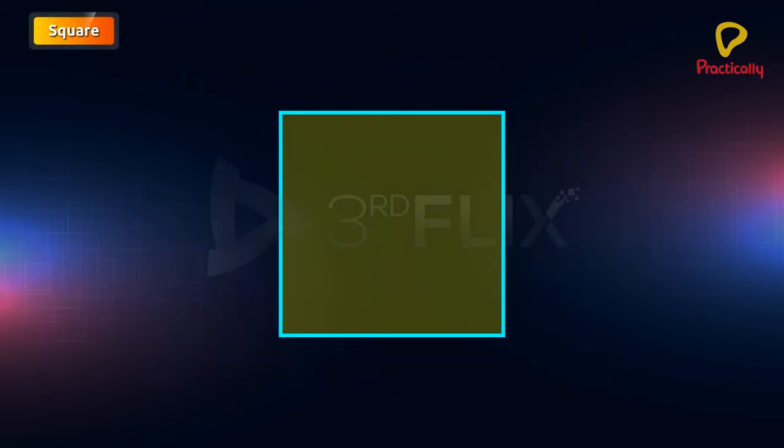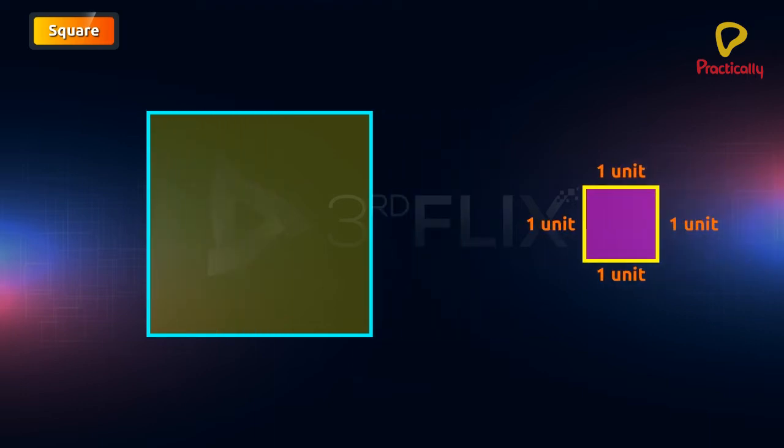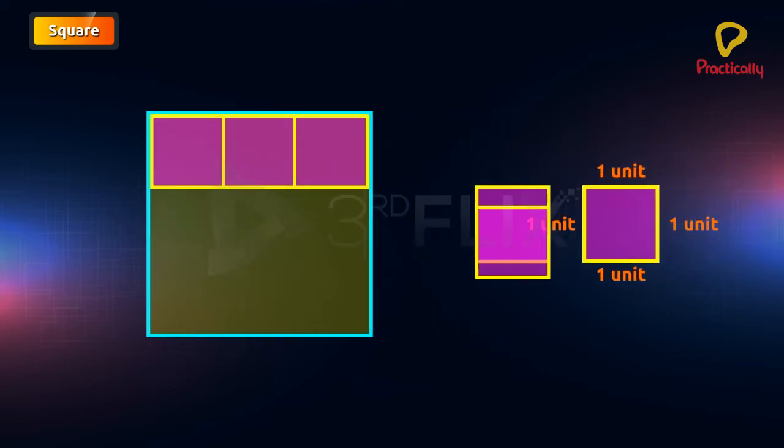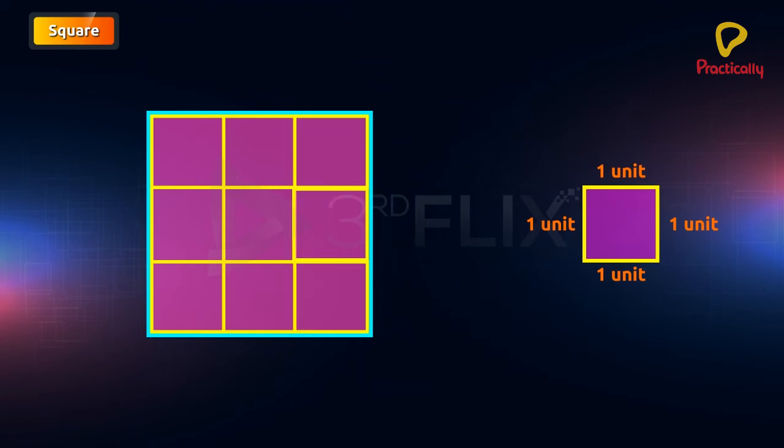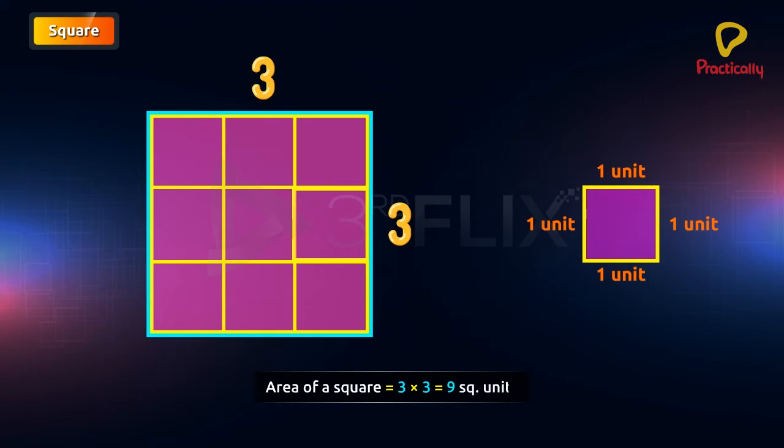Square. Let us find the area of a square. In this square, we can fit 3 rows of 3 squares each. The area of the square equals to 3 into 3 square units equals to 9 square units.